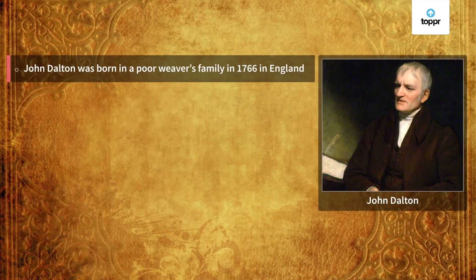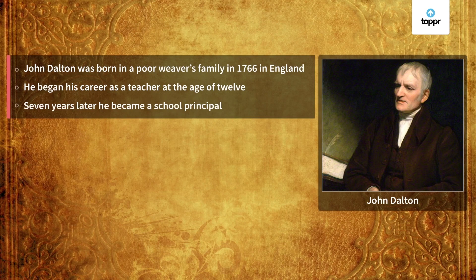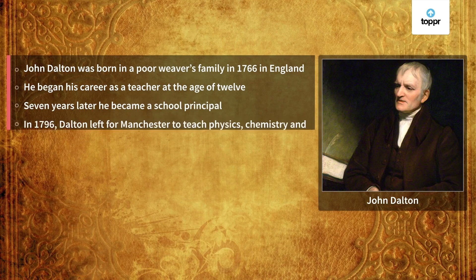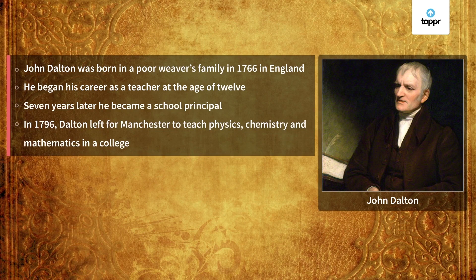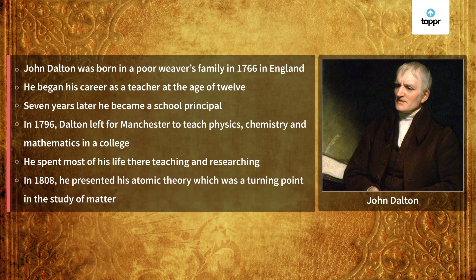John Dalton was born in 1766 in England to a very poor weaver's family. Because he was very poor, he started his career of teaching at the age of 12. Seven years later he became the principal of a school. Then in 1796 he moved to Manchester to teach physics, chemistry and mathematics in a college. He spent most of his life teaching and researching there, and in 1808 Dalton gave his atomic theory, which was a turning point in the study of matter.